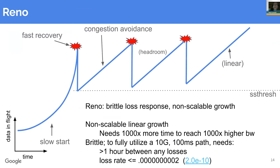Reno has a classic sawtooth behavior - multiplicative decrease by 50% every round trip with loss, then slow linear growth of one packet per round trip. This gives non-scalable growth where you need a thousand times more time to reach a thousand times higher bandwidth. For high-speed WANs with long RTTs, you need a long time between any losses to ramp back up to full utilization - at 10 Gigabit with 100ms path, you need an hour between packet losses, which works out to a loss rate of 2×10^-10, impossible to maintain.